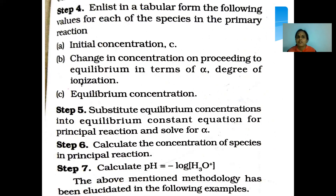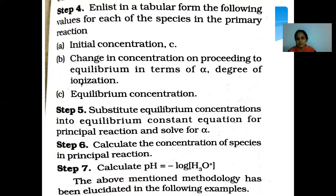List in tabular form the following values for each species in the primary reaction: initial concentration C, change in concentration proceeding to equilibrium in terms of alpha (degree of ionization), and equilibrium concentration. Then substitute equilibrium concentrations into the equilibrium constant equation for the principal reaction and solve for alpha. Next, calculate the concentration of species in the principal reaction.